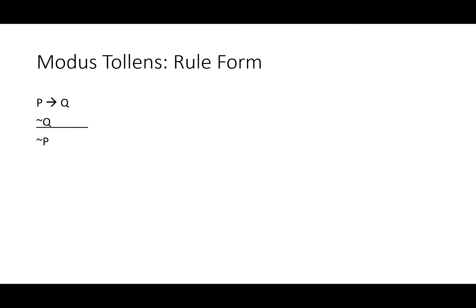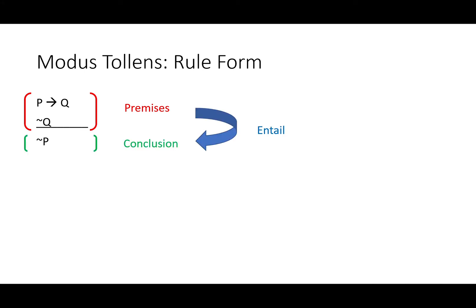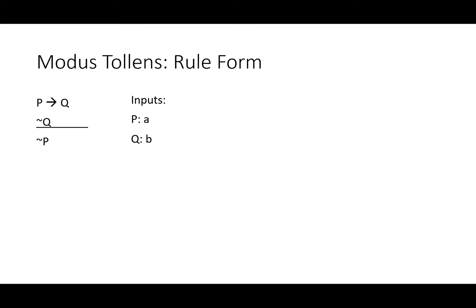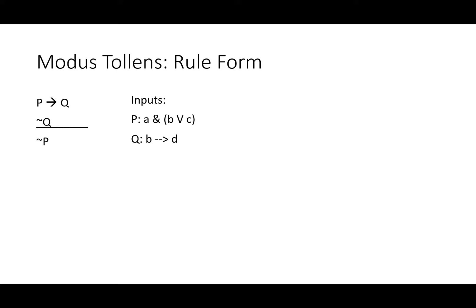Modus tollens is pretty similar to modus ponens, except instead of getting the antecedent, we negate the consequent. Above the line are our premises; below the line is the conclusion they entail. We'll substitute A and B to follow P and Q. The important thing to notice is that the negations are preserved: if A then B, not B, therefore not A. We can substitute in pretty complicated things for modus tollens — we'll use the same ones as before.